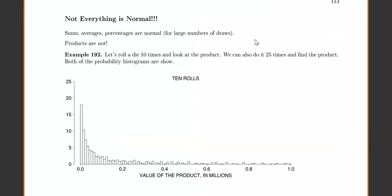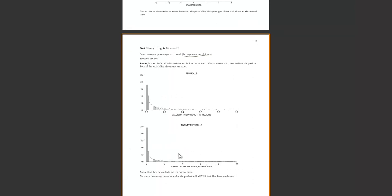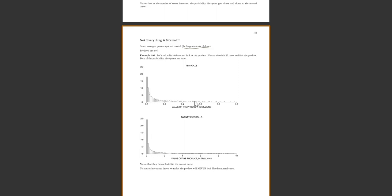Our last example tells us that not everything is normal. Sums — and also averages and percentages, which we haven't learned about yet — are normal for a large number of draws. But products are not, and many other things are not as well. If we roll a die 10 times or 25 times and look at the product of the results, the probability histograms definitely do not look like the normal curve. They have a huge long right tail, are definitely not symmetric, and don't look bell-shaped. It turns out that no matter how many draws we make, the product is never going to look like the normal curve.